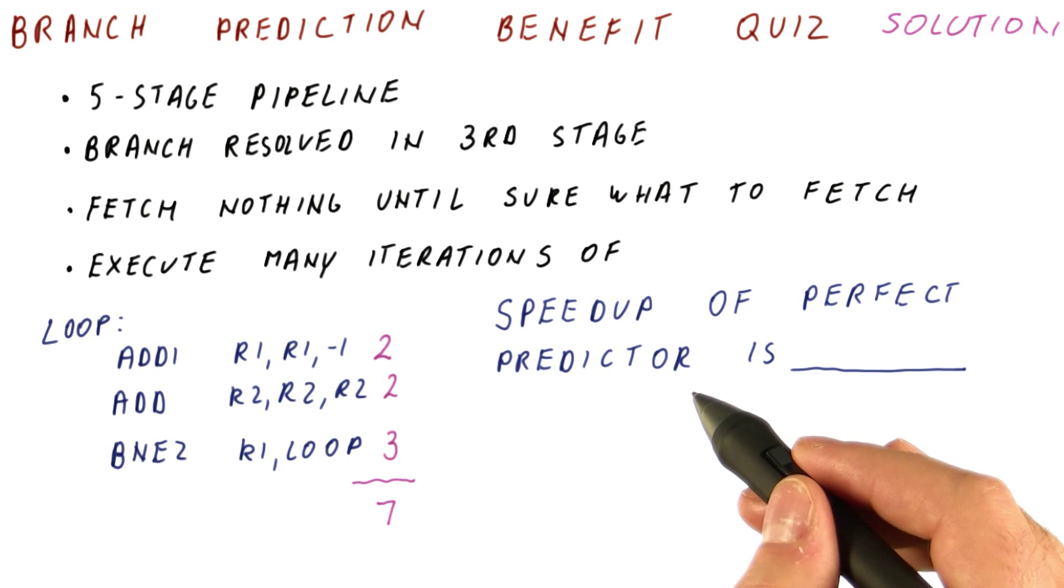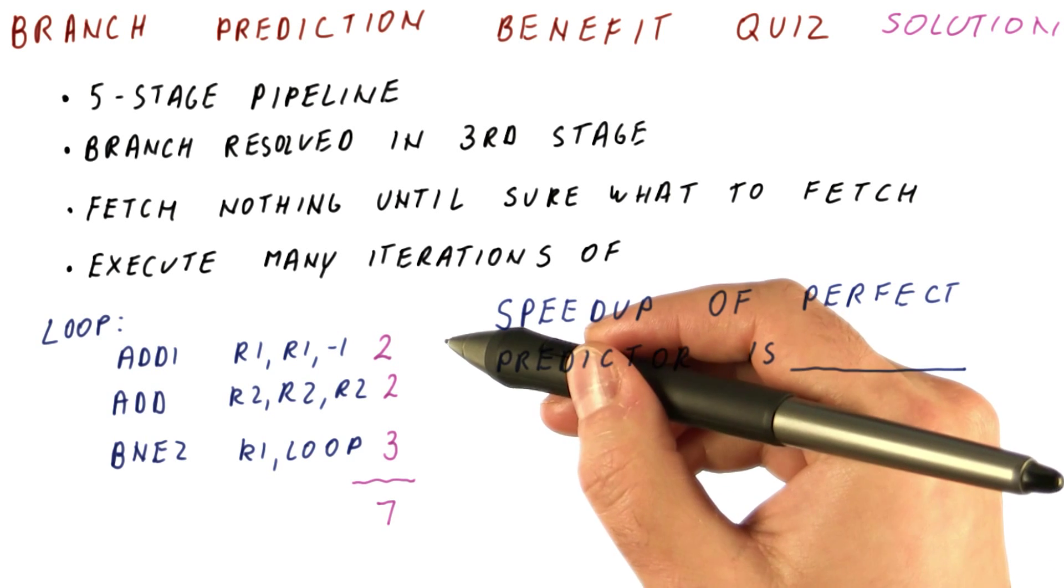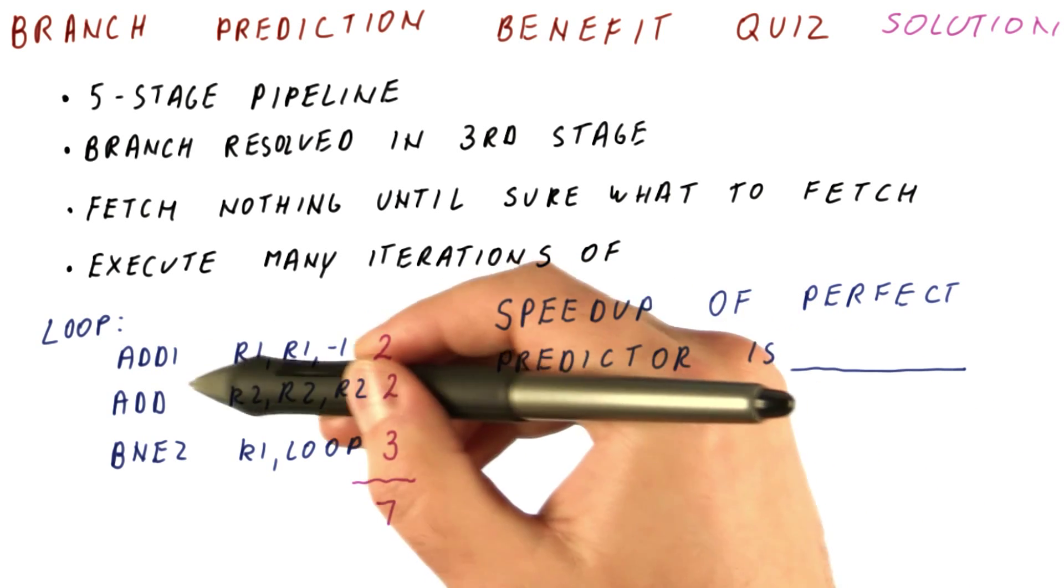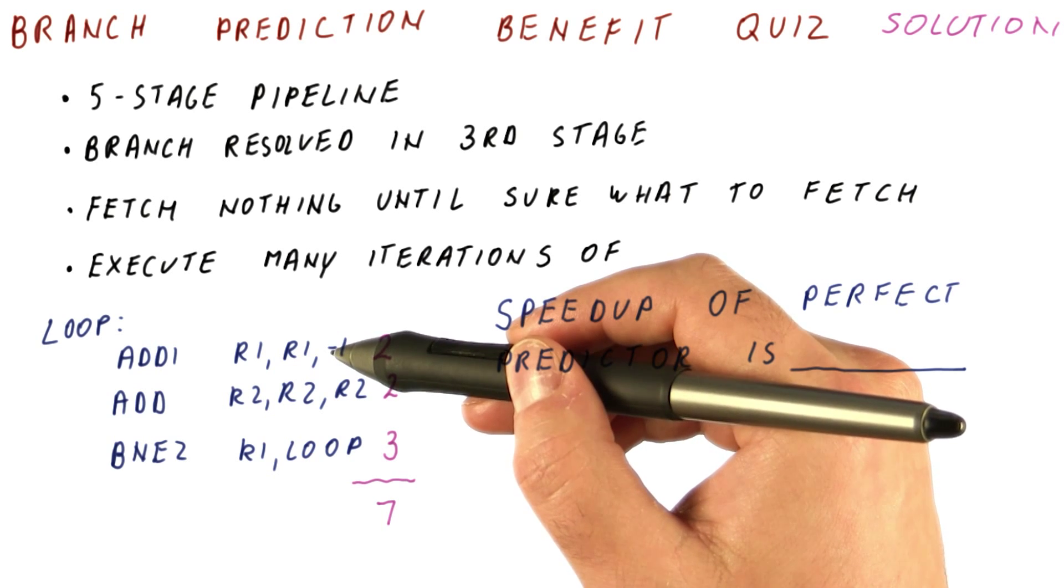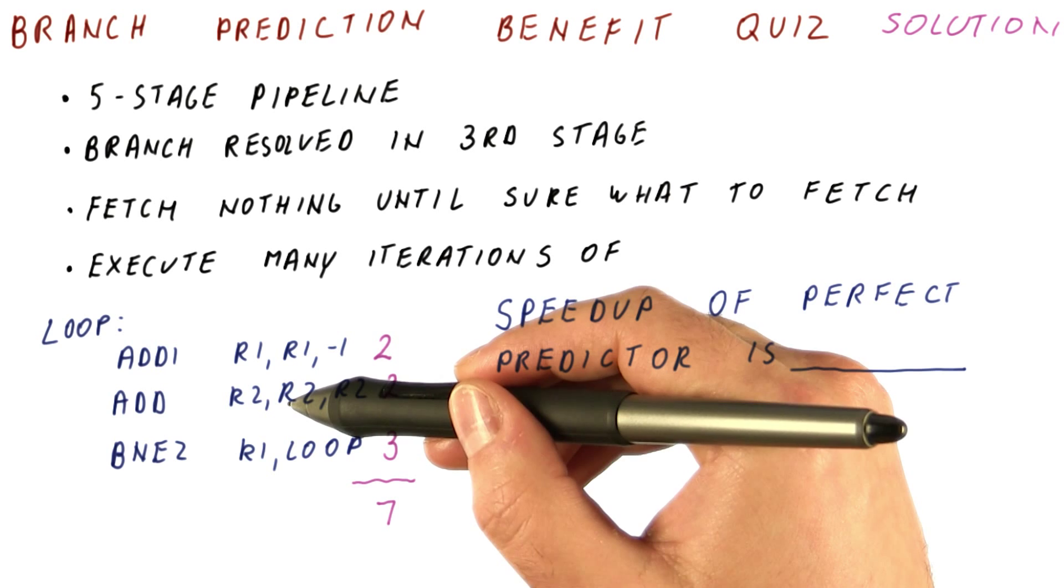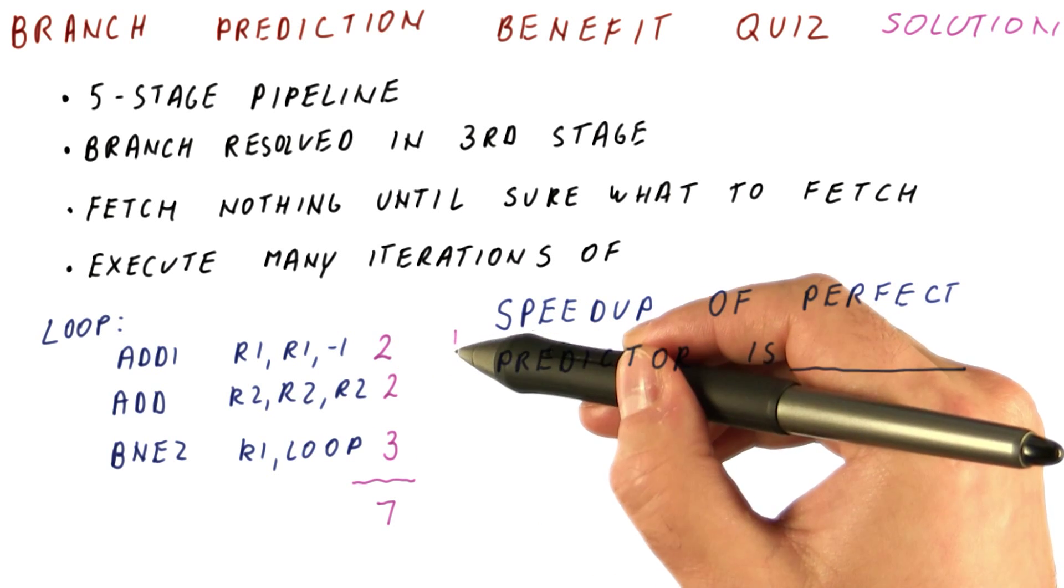Now, let's see what happens with the perfect predictor. With the perfect predictor, when we are fetching the ad, we can perfectly predict that the next instruction to fetch is this second ad. So we spend one cycle here, one cycle here.